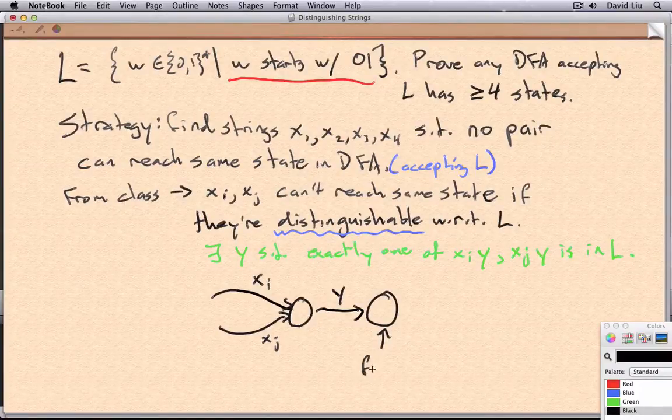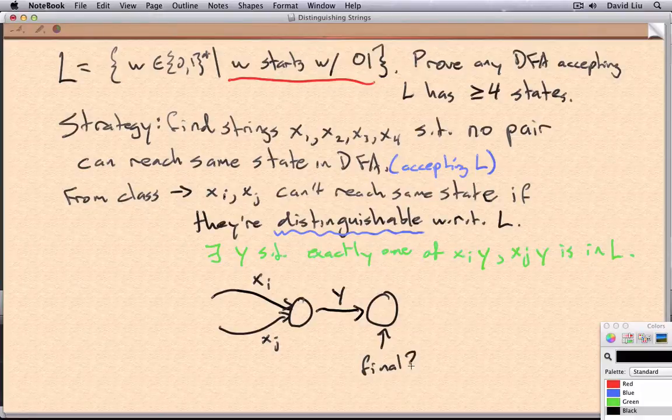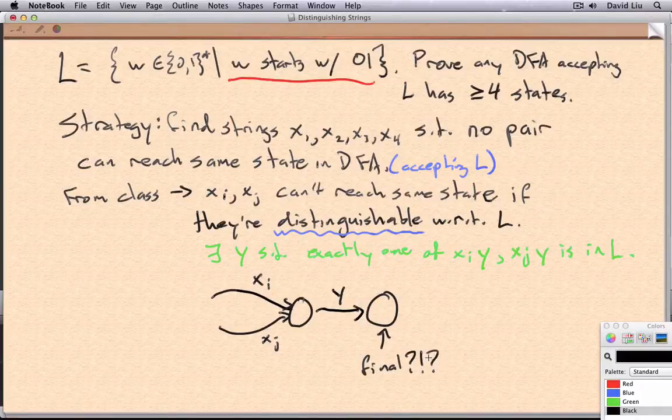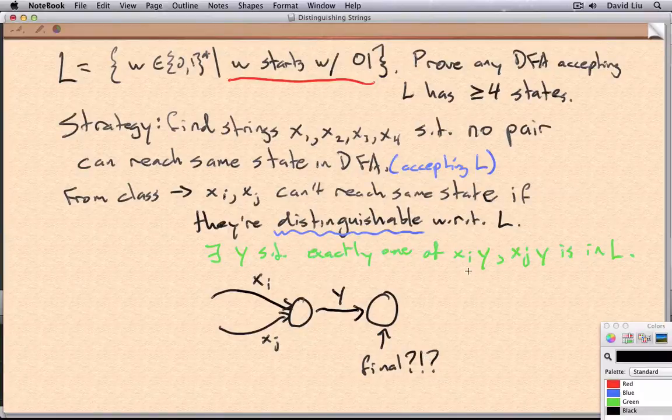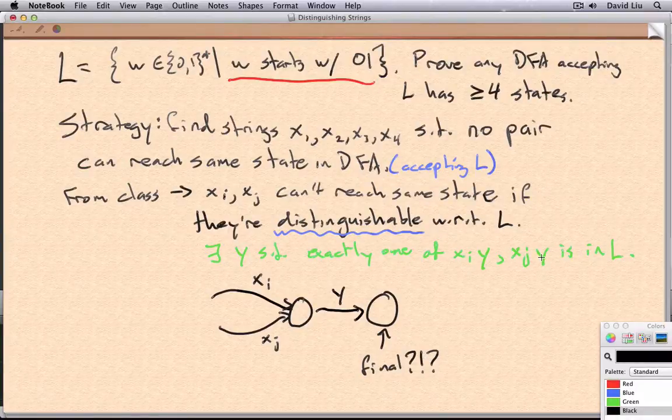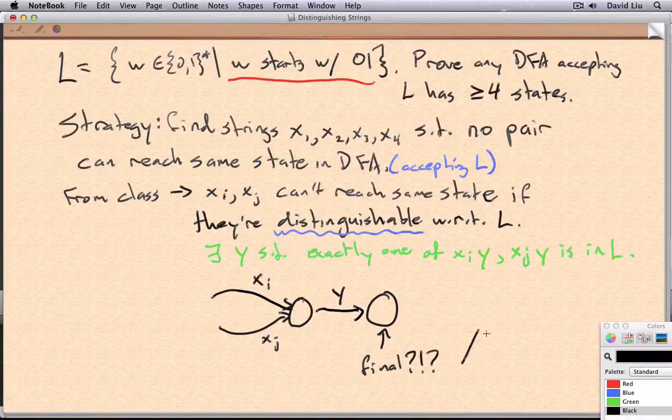Now this state over here, it couldn't be final, but it couldn't be non-final either because only one of XIY and XJY was in L. So this leads to a contradiction.